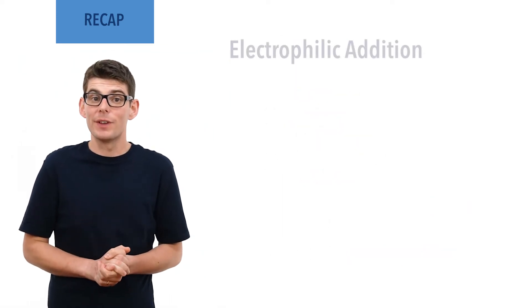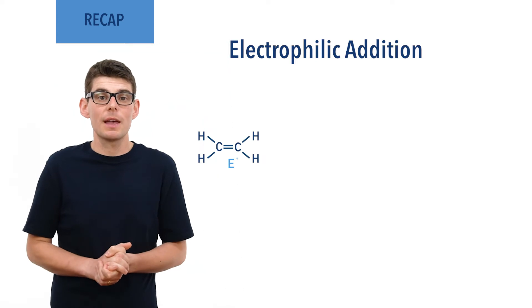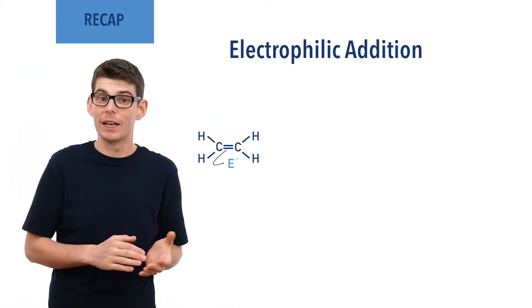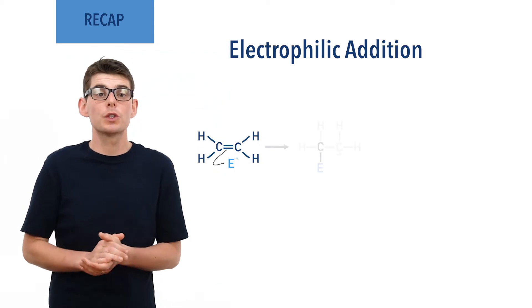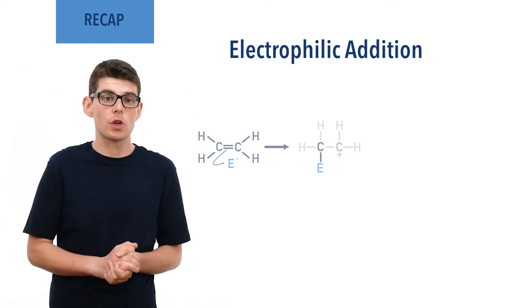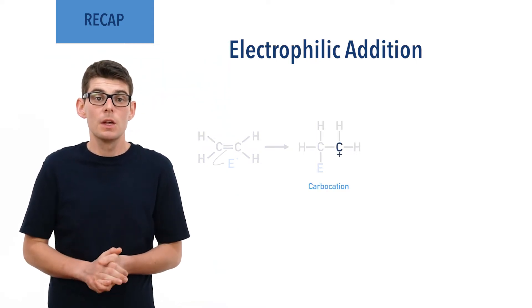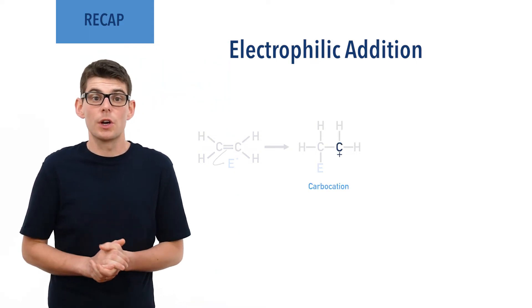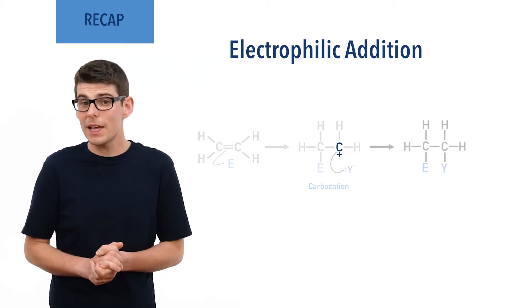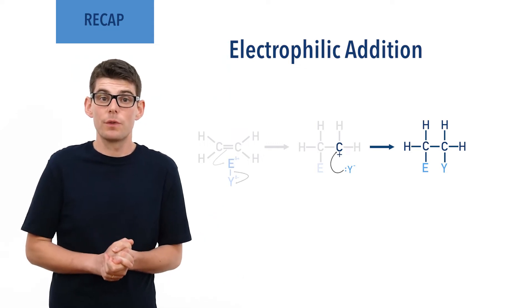Alkenes react by electrophilic addition reactions. An electrophile accepts a pair of pi bonding electrons from the carbon-carbon double bond in the alkene, forming a new bond to one of the carbon atoms and leaving the other carbon atom with a positive charge, forming a carbocation intermediate. The positively charged carbon in the carbocation will then form a new bond with a negatively charged ion, which is usually produced as the electrophile gets formed.